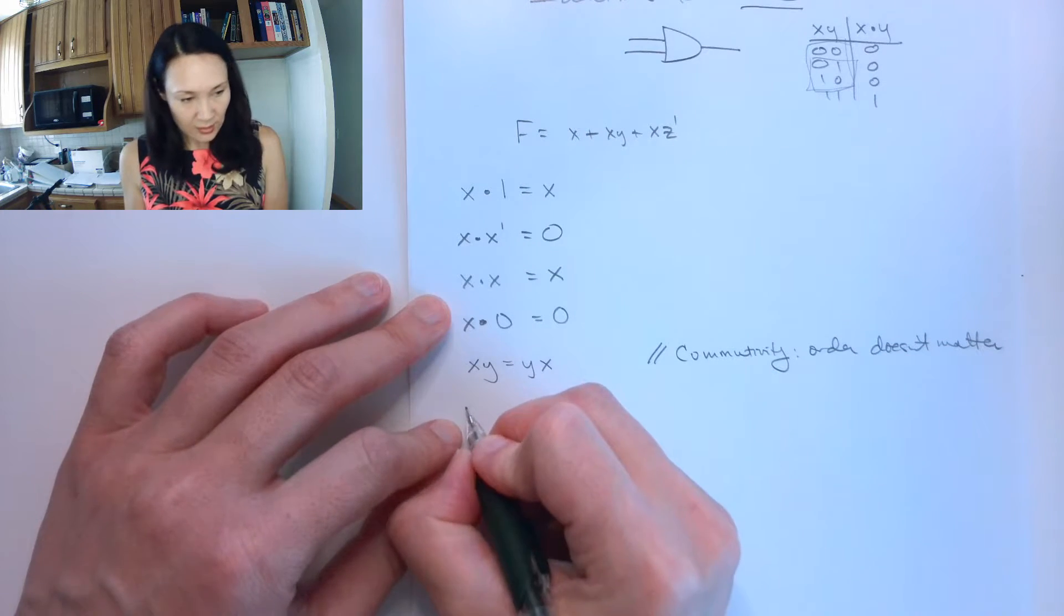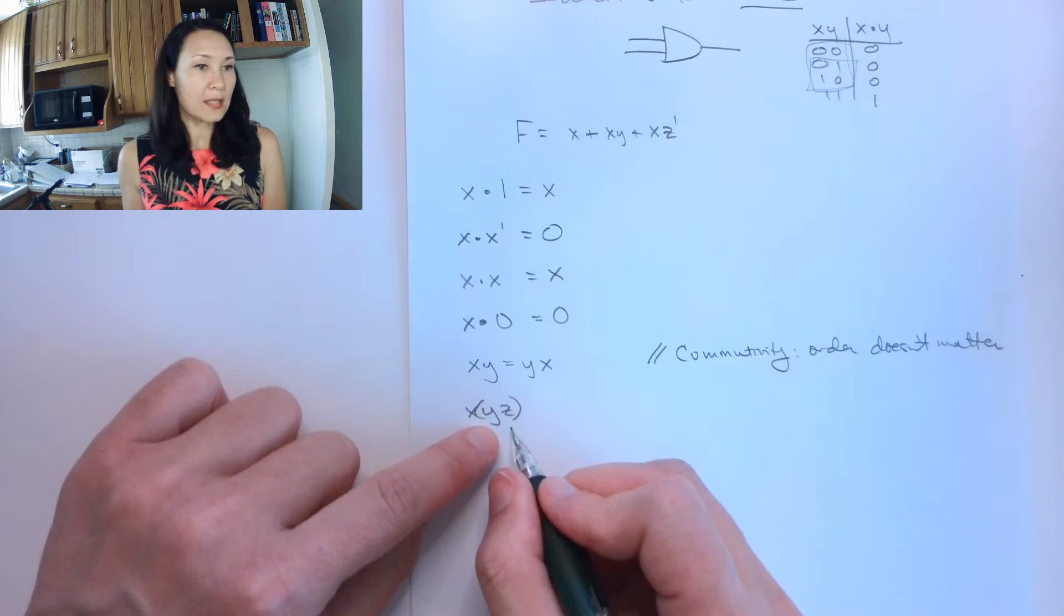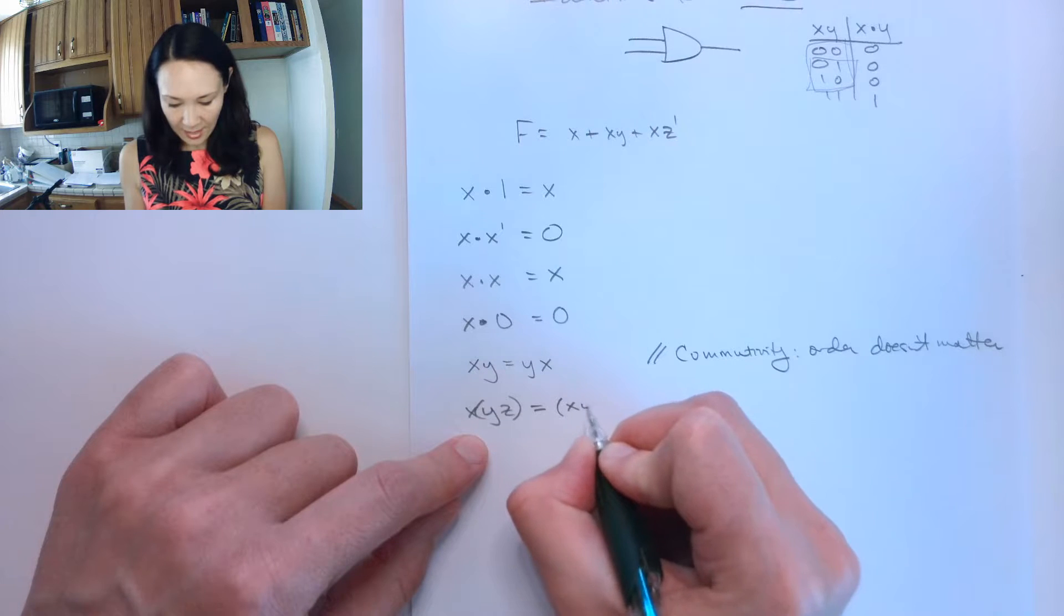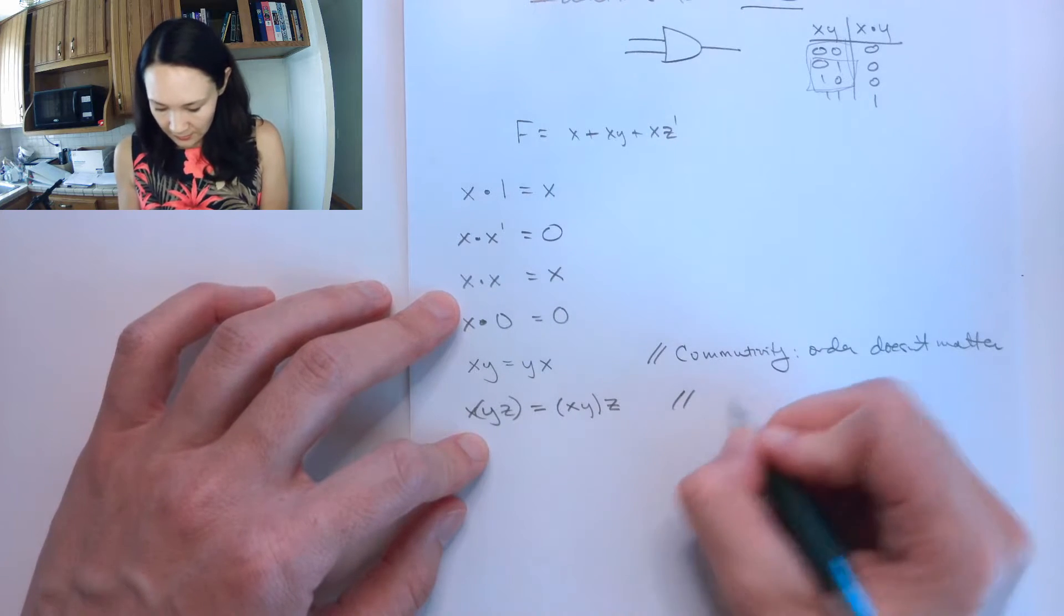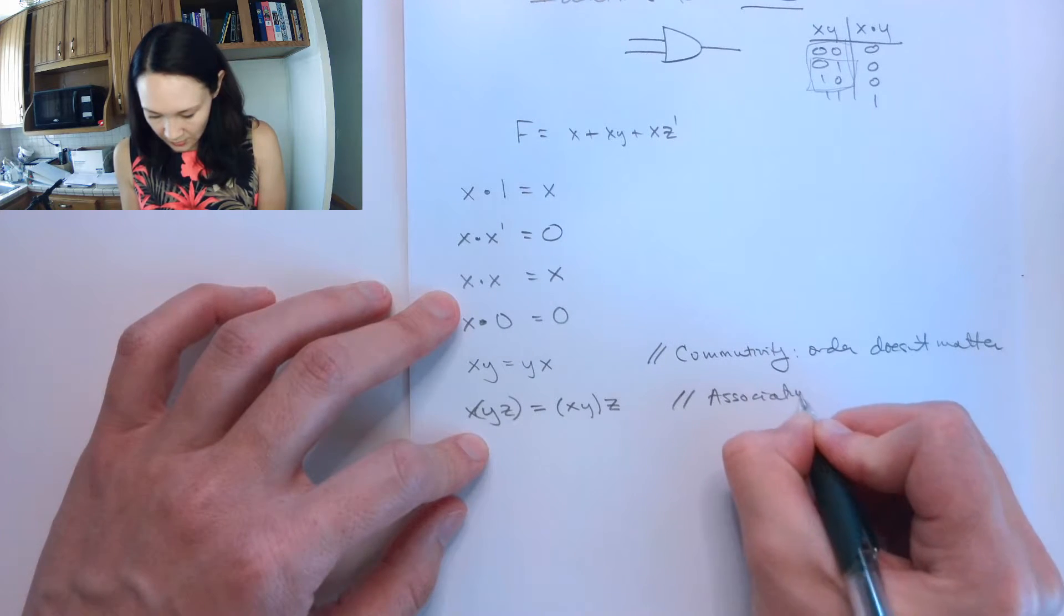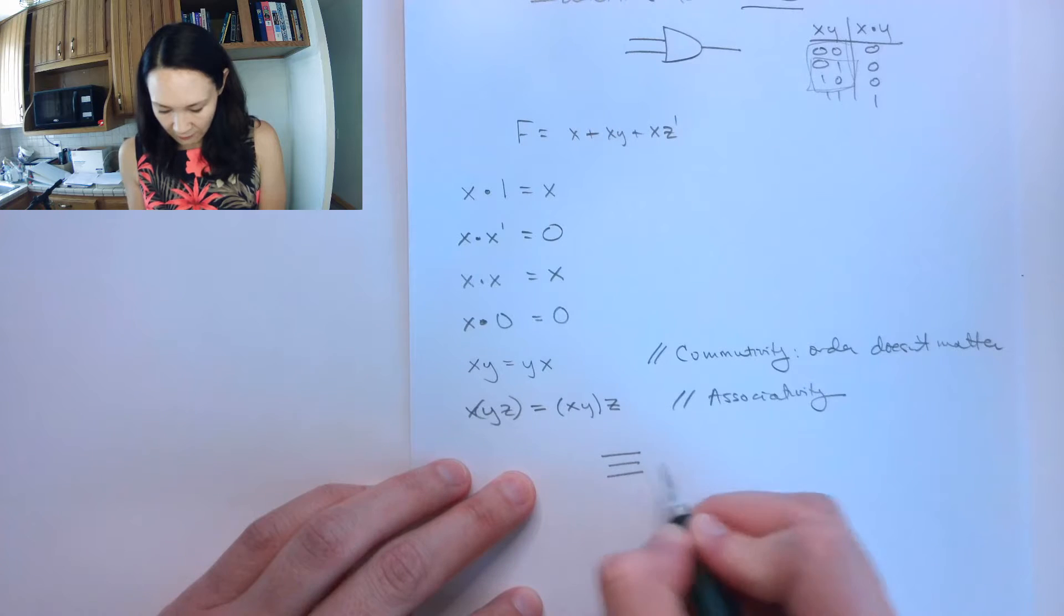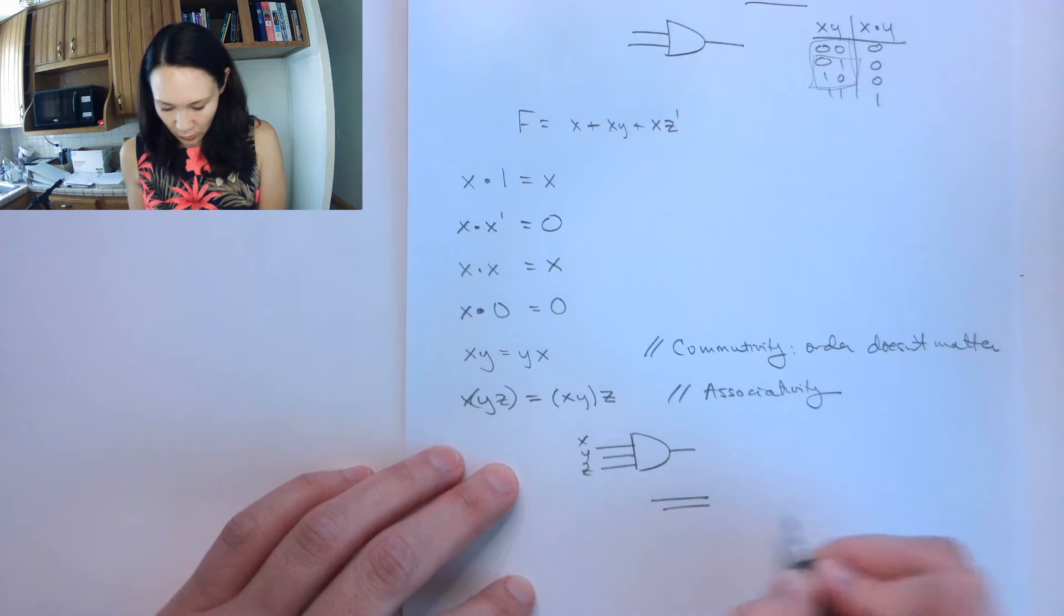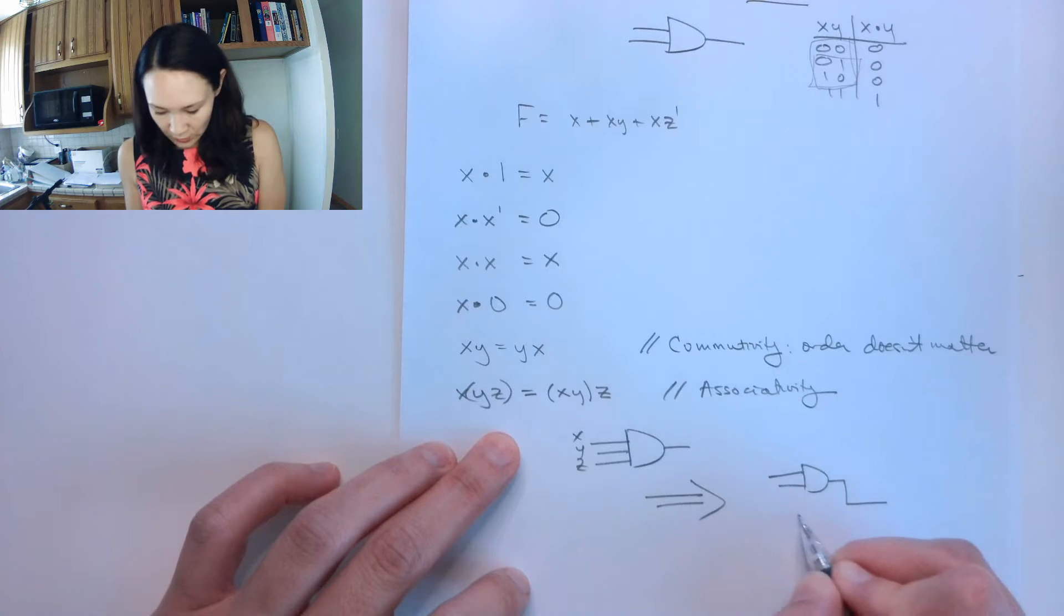And then the next one is associativity. If we have x, y, z, if we AND together y and z first and then AND that result to x, that's equivalent to if we AND x and y together first and then take that result and AND it with z. This is associativity. From a logical standpoint, if we have a 3-input AND with inputs x, y, and z, this is actually equivalent to if we ANDed together x and y first and then took that result and ANDed it with z.